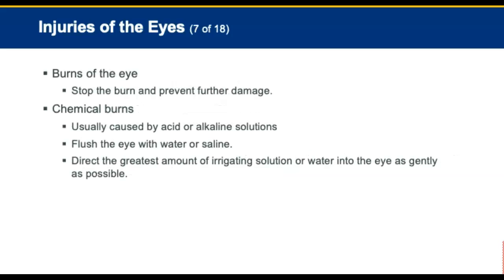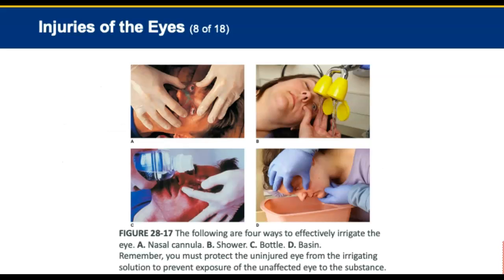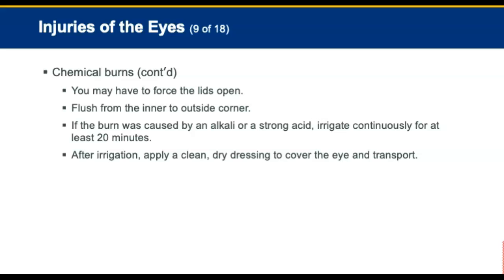For burns of the eye, first stop the burn and prevent further damage. Chemical burns, usually caused by acid or alkaline solutions, require flushing the eye with water or sterile saline solution. Direct the irrigation solution or water into the eye as gently as possible. There are four ways to irrigate the eye as shown on this slide: a nasal cannula, a shower, a bottle, or a basin. For chemical burns, you may have to force the lids open. Flush from the inner to the outside corner. If the burn was caused by an alkali or a strong acid, irrigate continuously for at least 20 minutes. After irrigation, apply a clean, dry dressing, cover the eye, and transport.